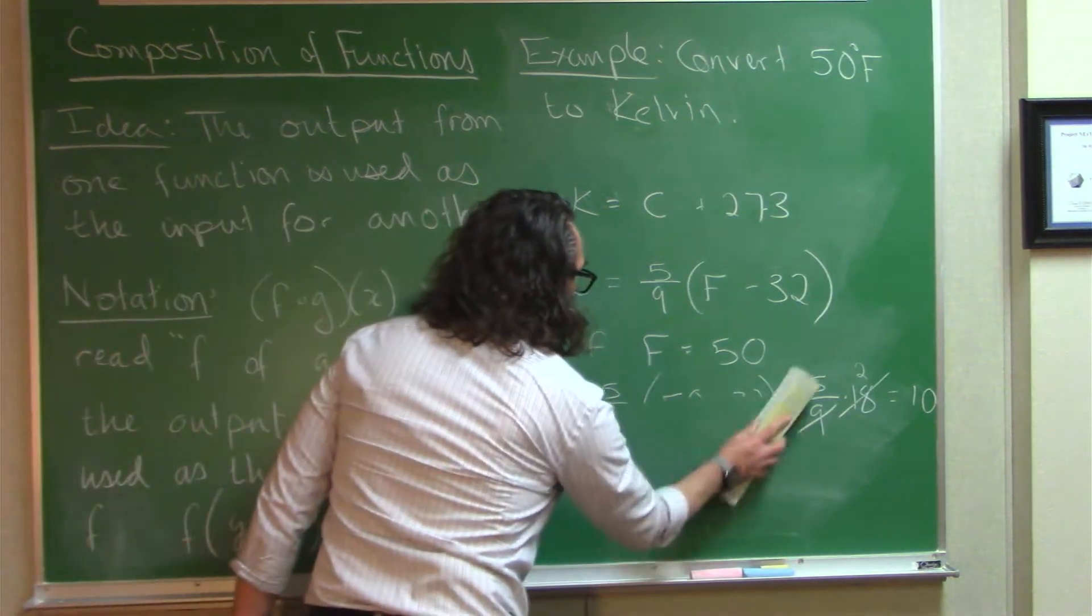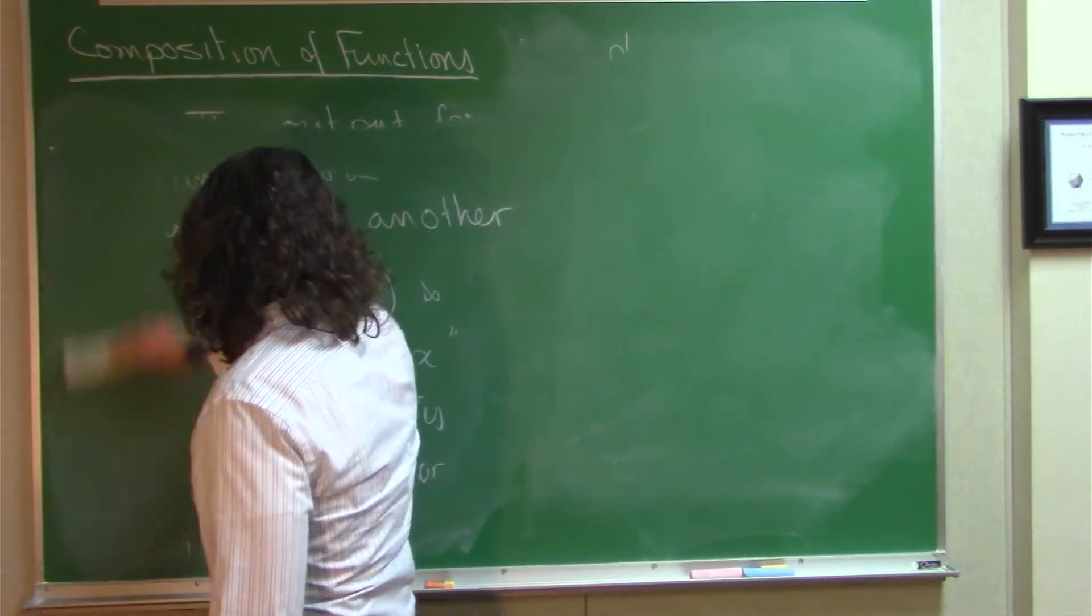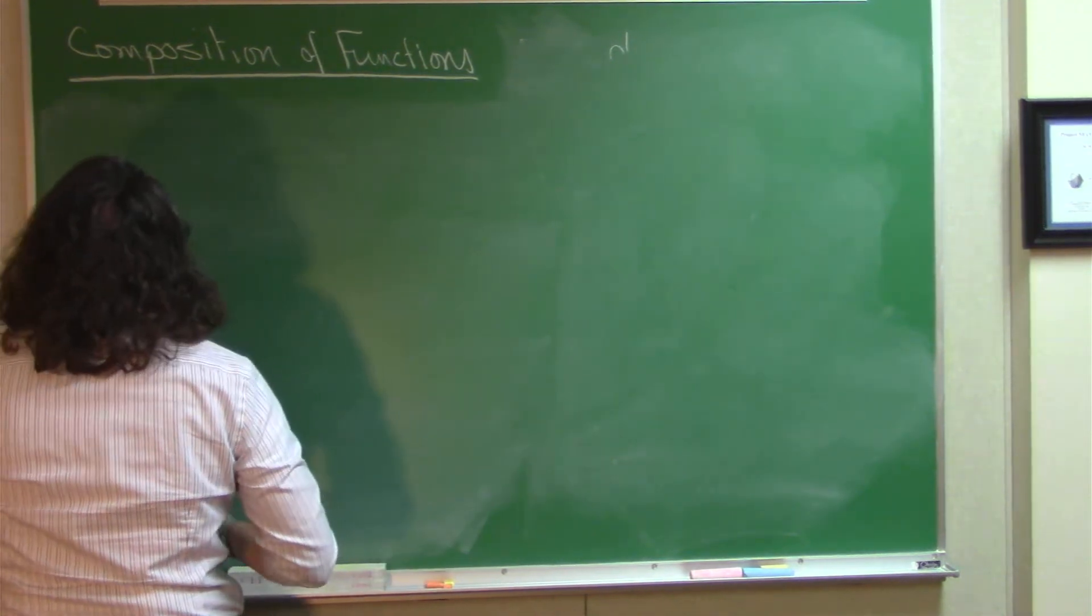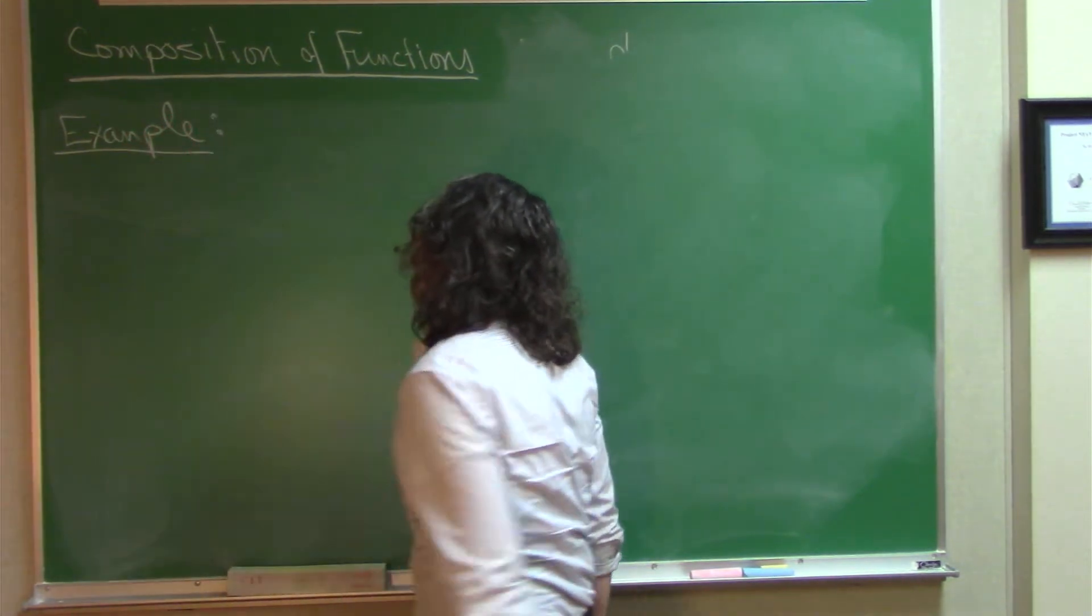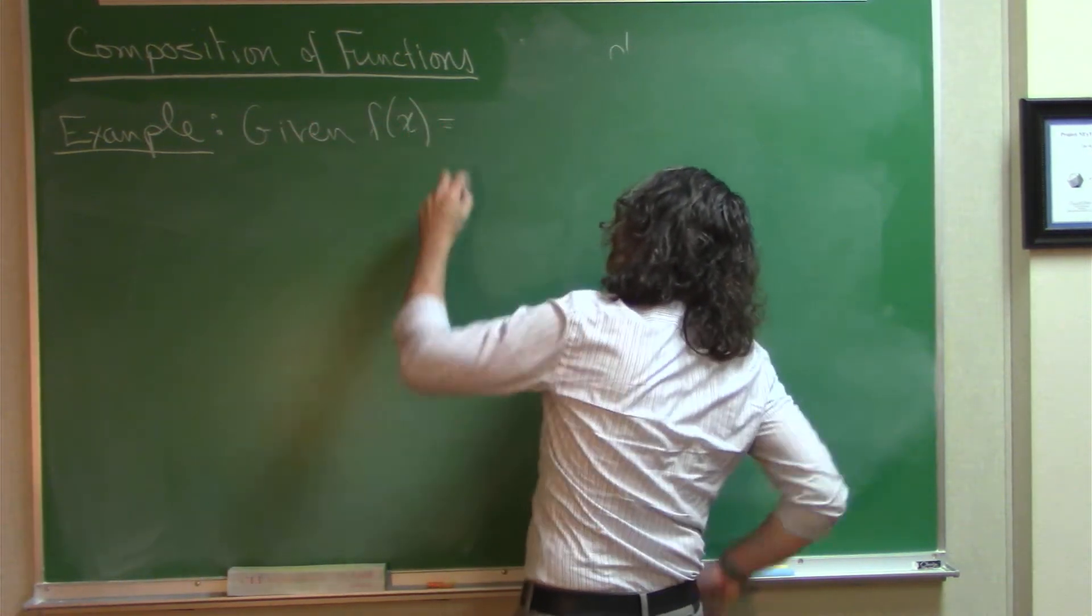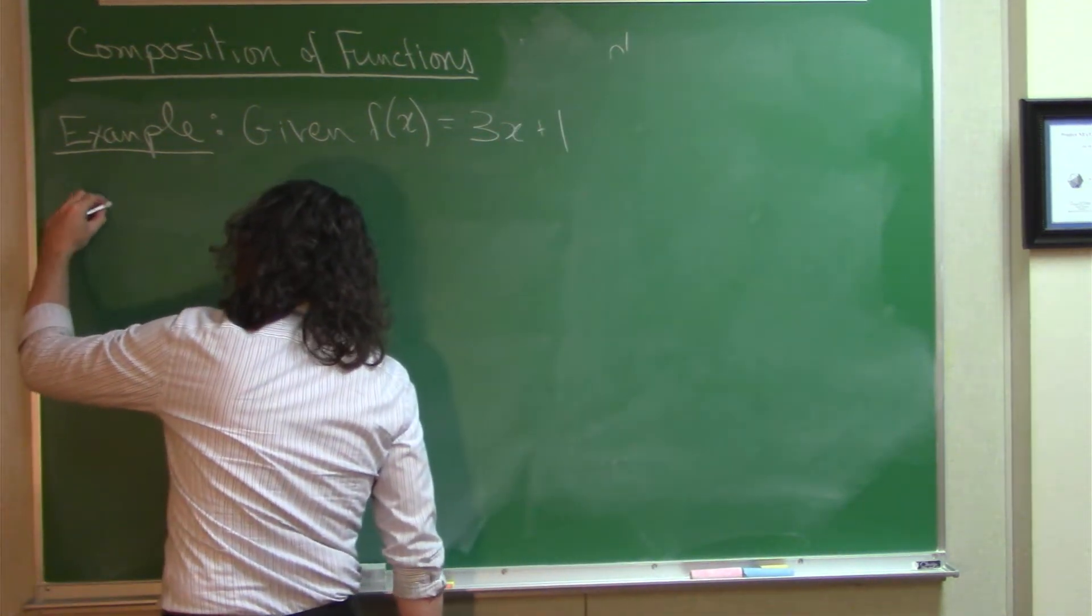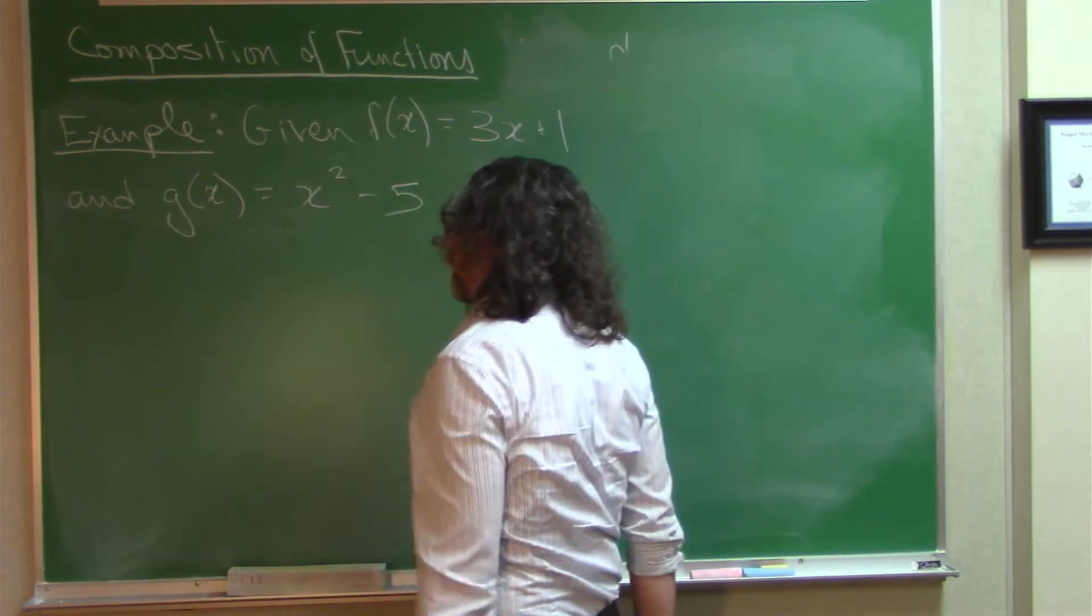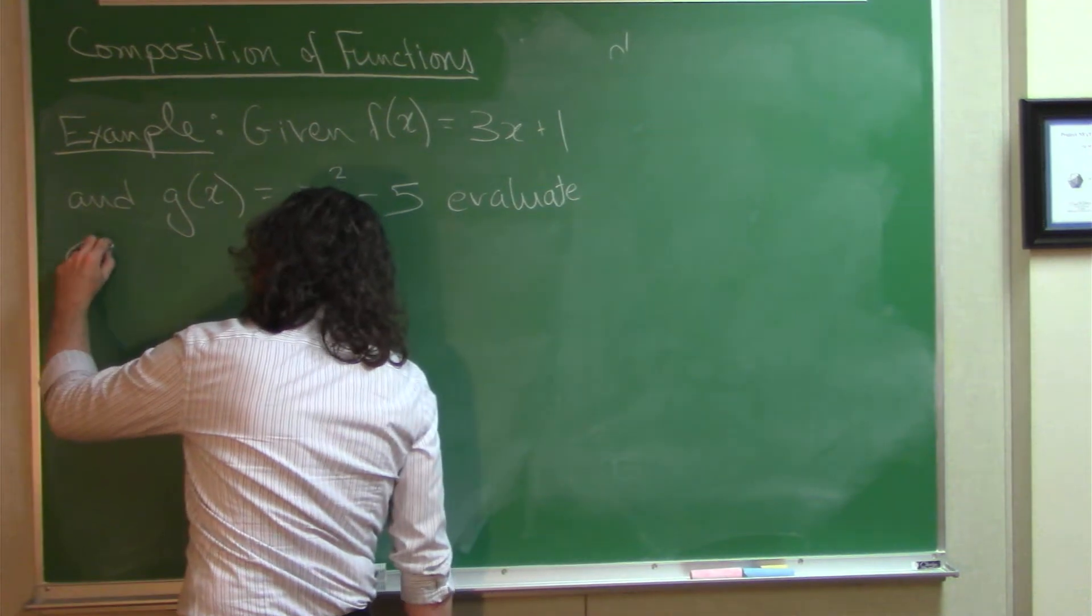Let's do a couple quick examples where we use the function notation. Okay, so given F of X equals 3X plus 1, and G of X equals X squared minus 5. Evaluate each.